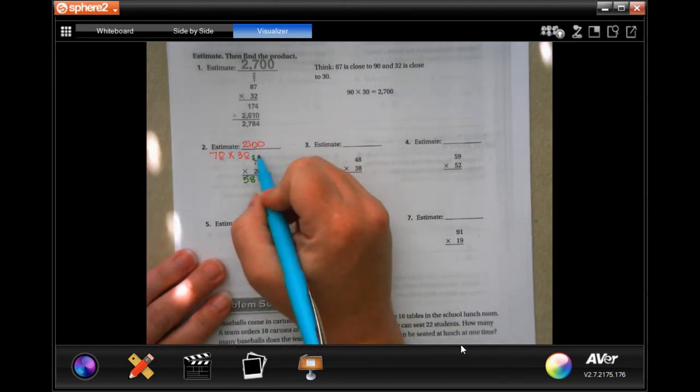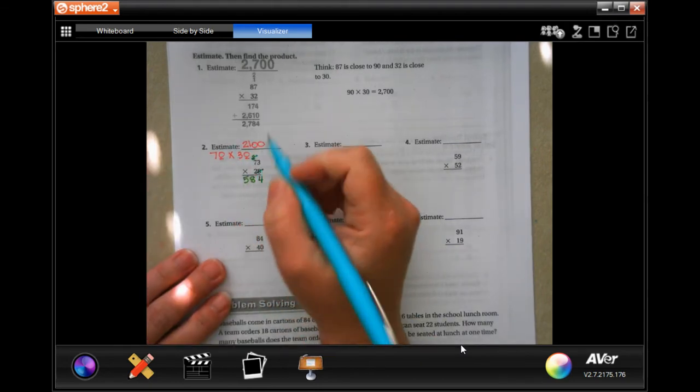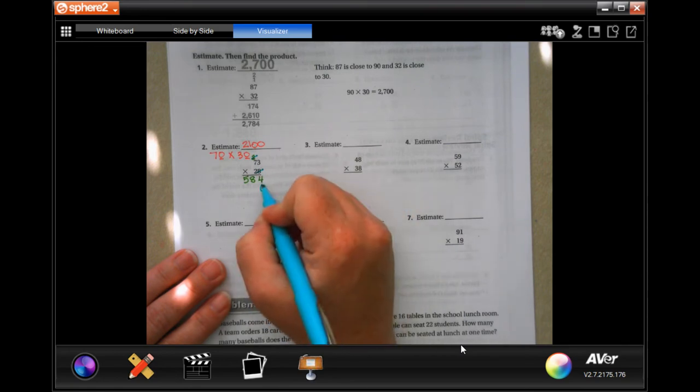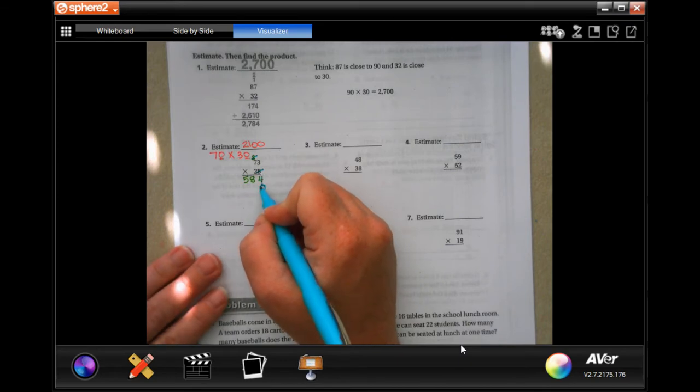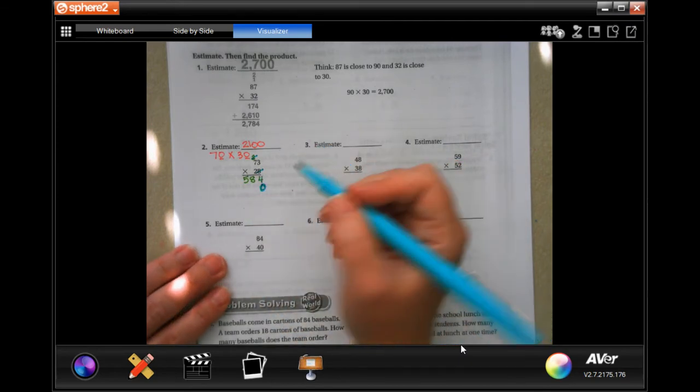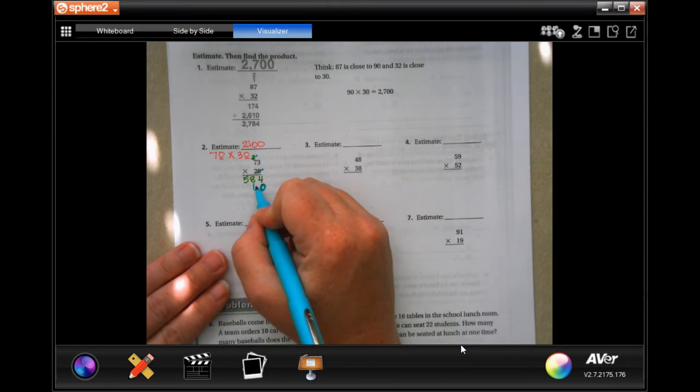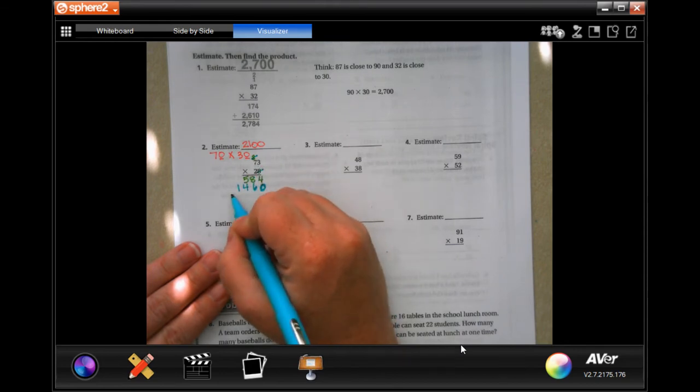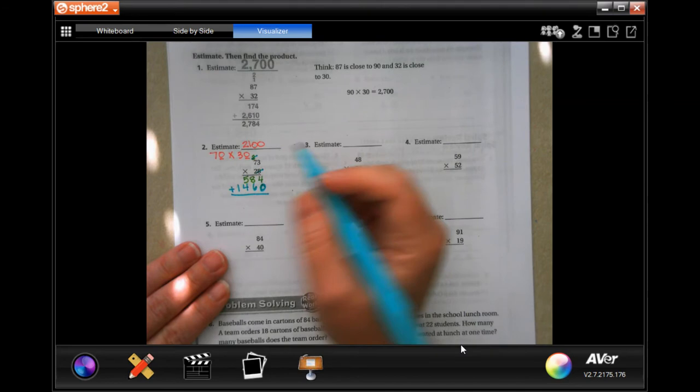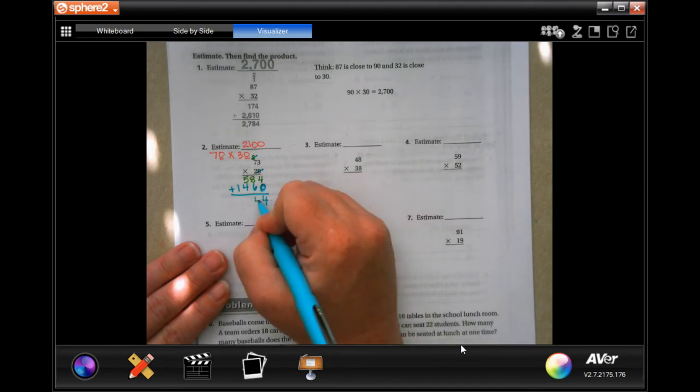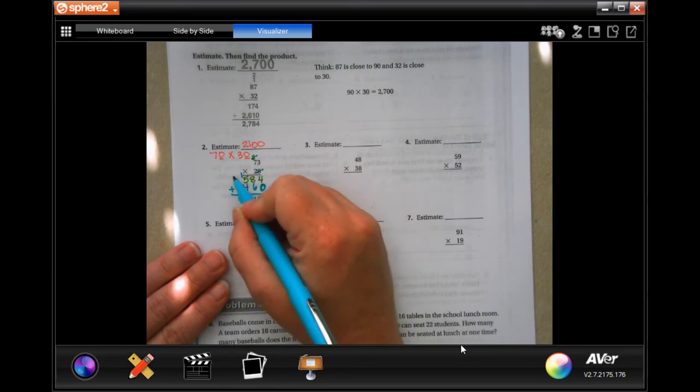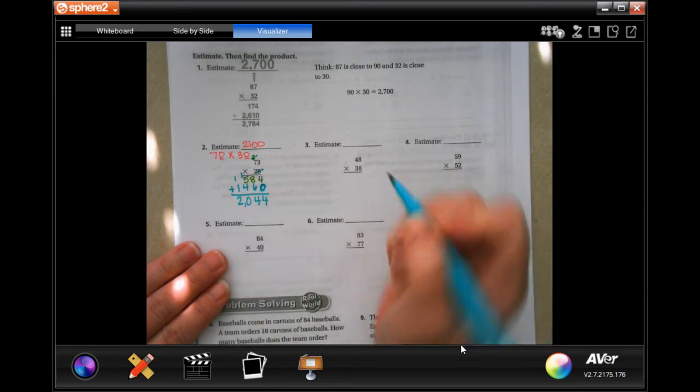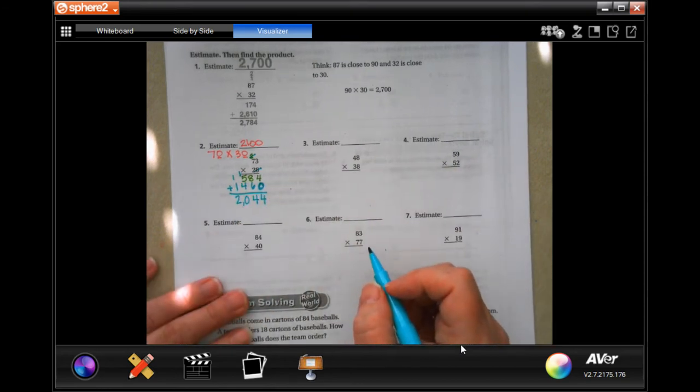Now we go in and we do our tic-tac-toe. We don't want to use that 2 anymore, we're done with the 8, and I need to hold a placeholder 0 in there. Now 2 times 3 is 6, and 2 times 7 is 14. Add those two up, 4, 14 carry 1, 6 plus 4 is 10. So 2,044.